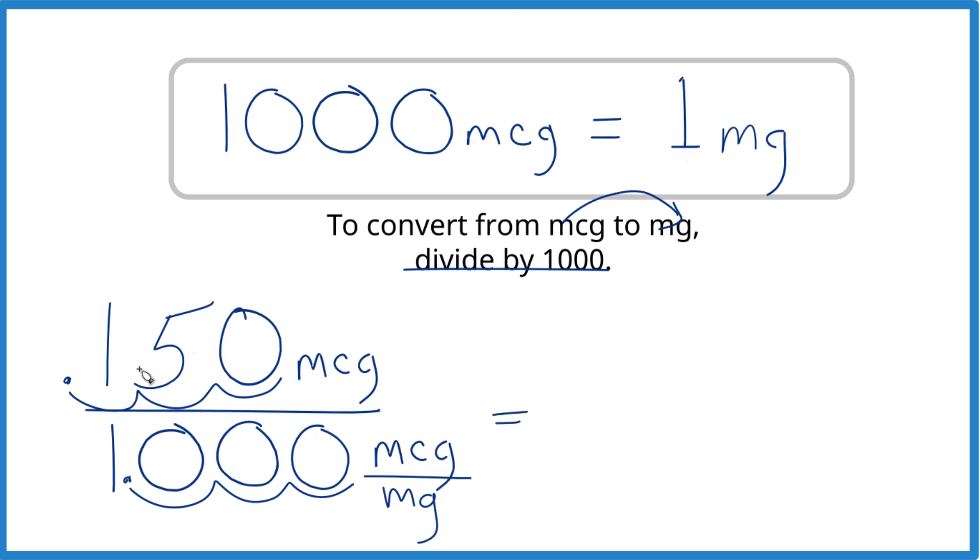And 150 mcg divided by 1,000, that's 0.15. We'll leave this last 0 off. These cancel out. We're left with milligrams. That's what we're looking for.